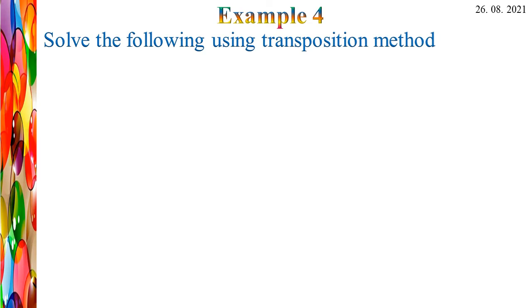Let's see Example 4: Solve the following using the transposition method. First: X + 5 = 8. Here the equation is X + 5 = 8. The variable is X, and the constant terms are 5 and 8. Transposition means we are going to shift the position of the term from one side to the other.